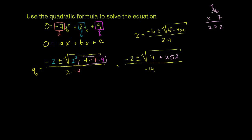Now what does this equal? This equals negative 2 plus or minus the square root of—4 plus 252 is 256—all over negative 14. What's the square root of 256? It's 16. You can try it: 16 times 16. So the square root of 256 is 16.